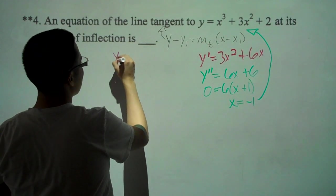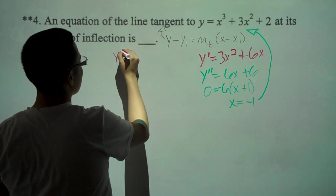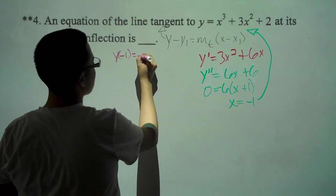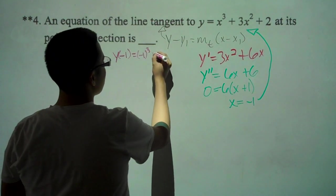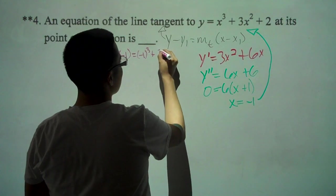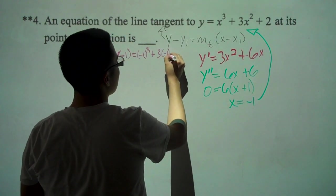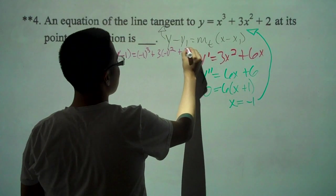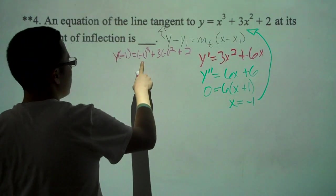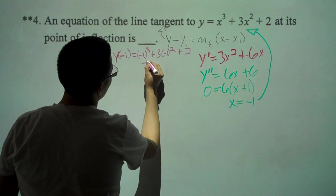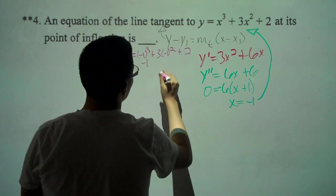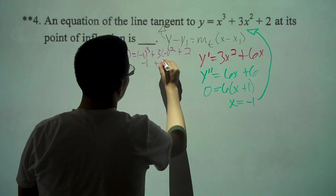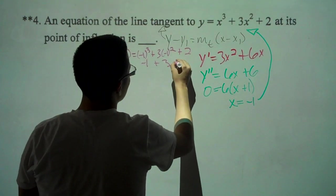y of negative 1 equals negative 1 cubed plus 3 times negative 1 squared plus 2. Negative 1 cubed is negative 1, 3 times negative 1 squared is 3, plus 2,